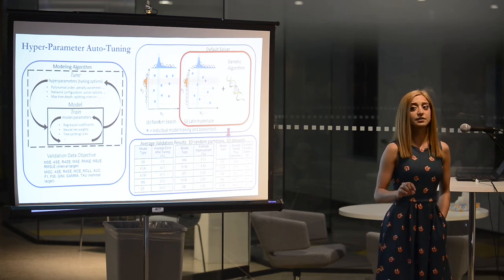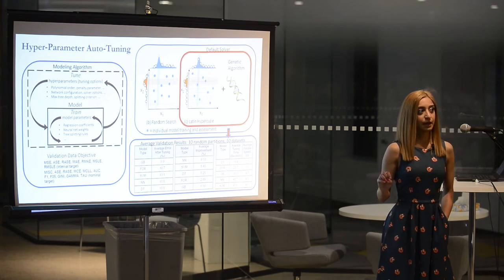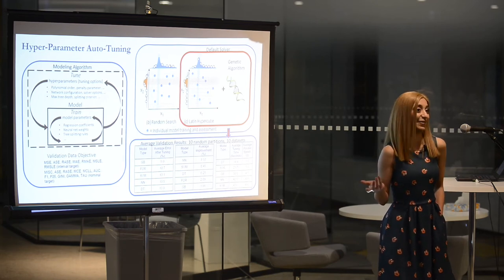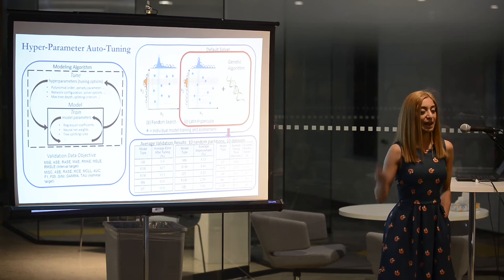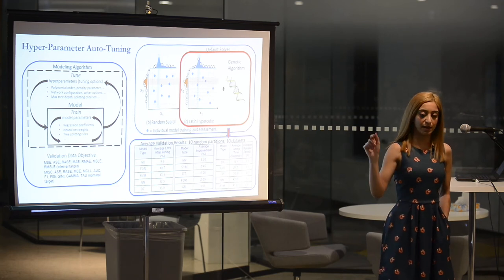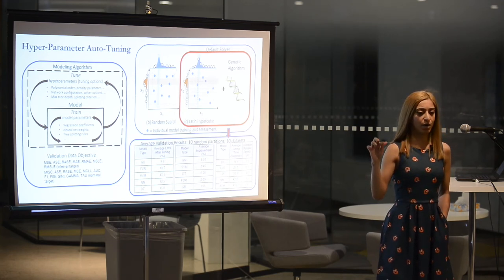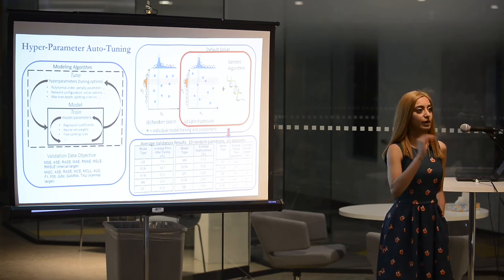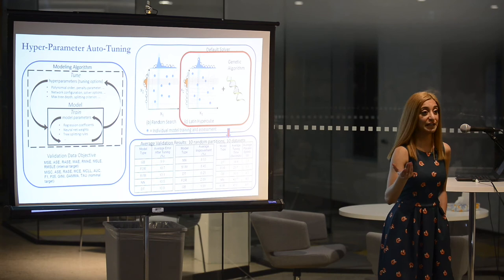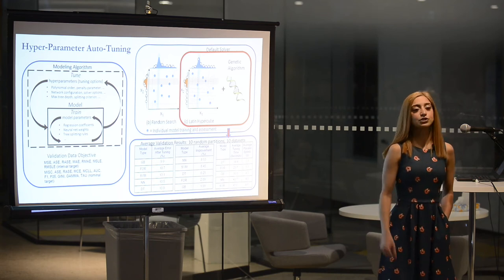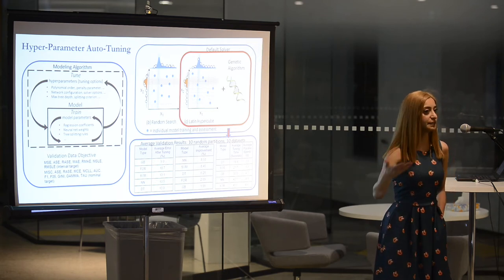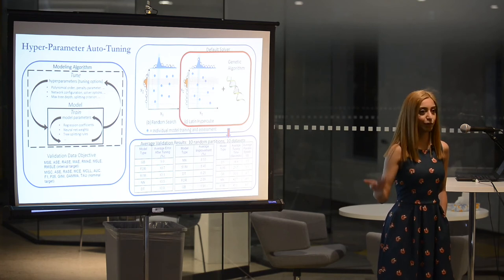Something to keep in mind: not all auto-tuning algorithms are the same. A lot of auto-tuning models are random — similar to a person trying different combinations at random — and it takes a very, very long time. I've seen situations where someone ran a random auto-tune on a model, got a decent result, ran it again, and started getting worse results. We never found that optimal combination ever again. So when looking at auto-tuning, ask: is it a random search, or is it something more sophisticated? Nobody has to settle for random searches.